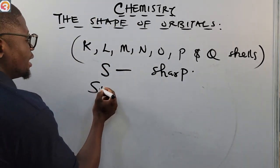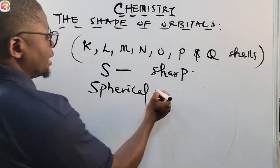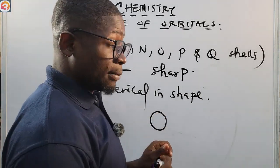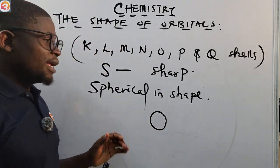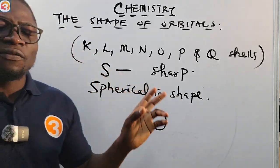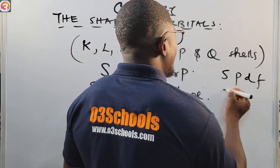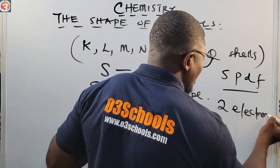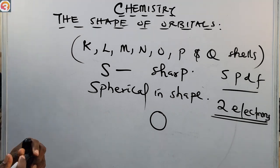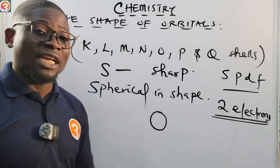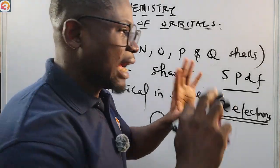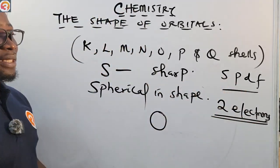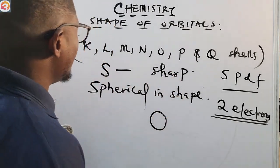Let us begin with the S orbital, which stands for Sharp. The shape of the S orbital is spherical — it is spherical in shape. Among all four orbitals (S, P, D, F), the S orbital has the least number of electrons. The S orbital can only accommodate two electrons.